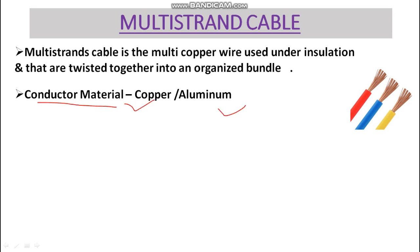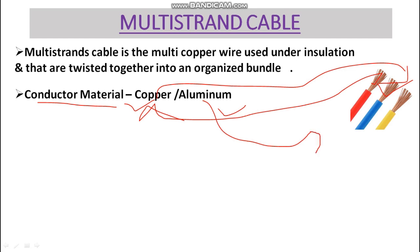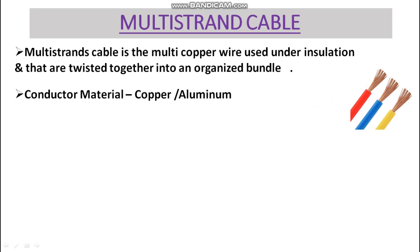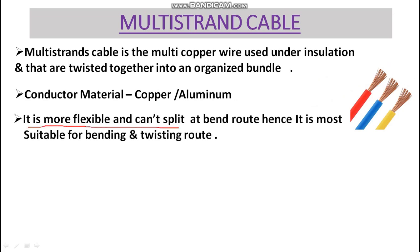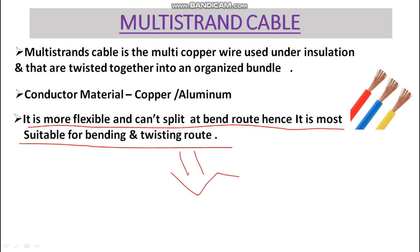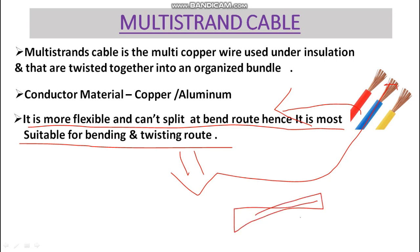The conductor material can be copper or aluminum. Mostly on the low voltage side it is copper type, and above that it can be copper or aluminum. This cable is more flexible and won't split at bend points, hence it is more suitable for bending and twisted routes because of the multiple strands of copper.